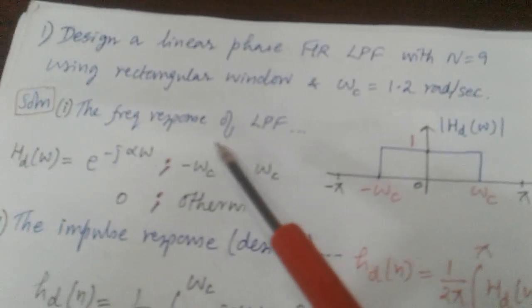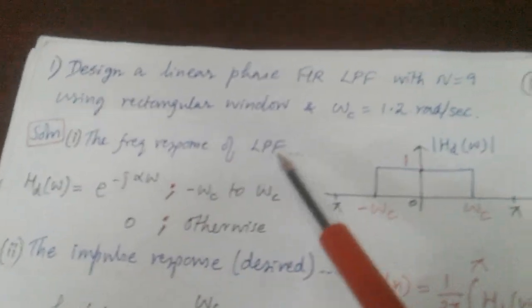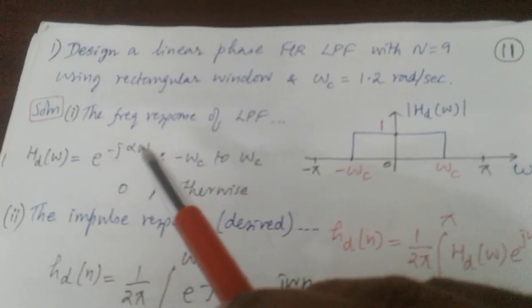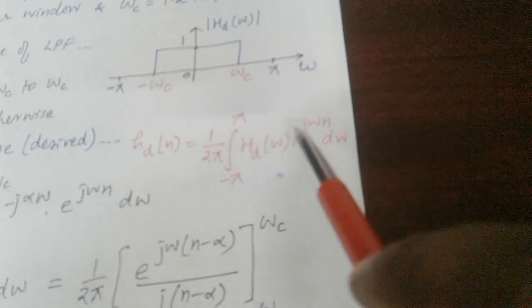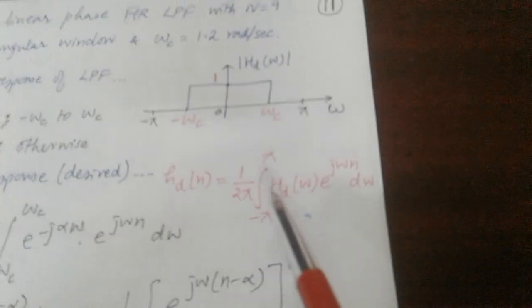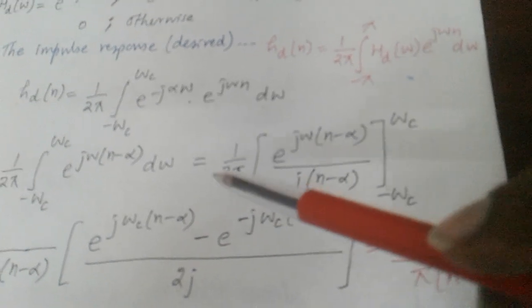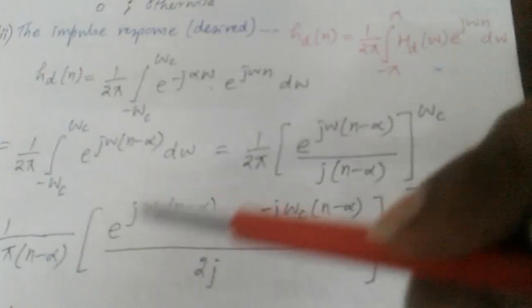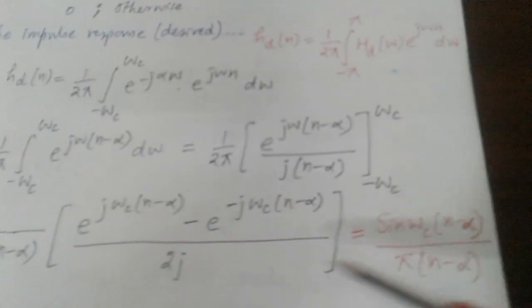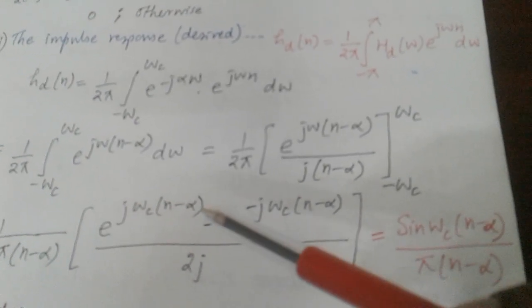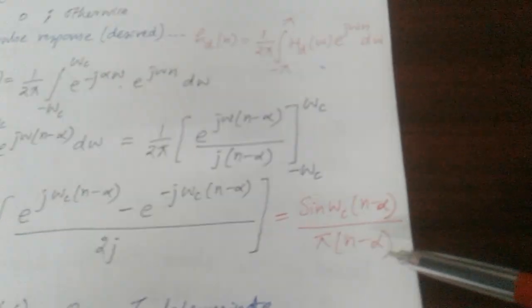Step 1: Choose the desired frequency response. Since it is a low-pass filter, draw it from −ωc to +ωc and write H_D(ω) = e^{−jαω}. Step 2: Find small h_D(n) using the inverse DTFT formula. Substitute H_D(ω) = e^{−jαω} into the integral, integrate, and simplify using e^{jθ} − e^{−jθ} = 2j sin θ. The result is: h_D(n) = sin[ωc(n − α)] / [π(n − α)], valid for n ≠ α.